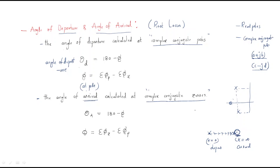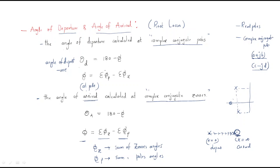The angle of arrival is only for complex conjugate zeros. The angle of arrival formula is: θa = 180 − φ, where φ equals the summation of zero angles minus the summation of pole angles. So the difference between the sum of zero angles and sum of pole angles gives φ.